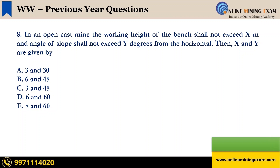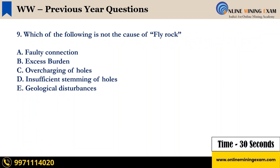Time up. The correct answer is D: 6 meter and 60 degrees. Next question. Which of the following is NOT the cause of fly rock? A: Faulty connection, B: Excess burden, C: Overcharging of holes, D: Insufficient stemming of holes, E: Geological disturbances. Your time starts now.